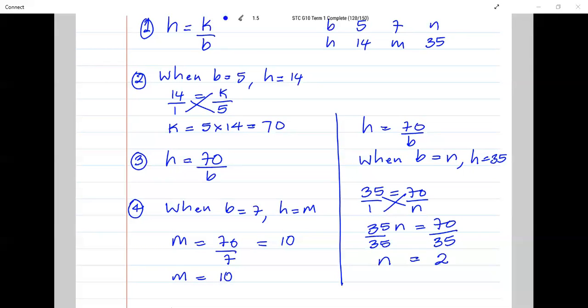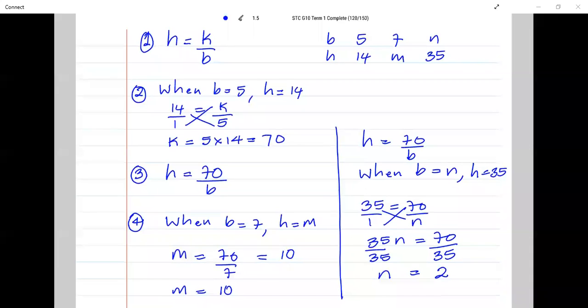So, ladies and gentlemen, M is equal to 10 and N is equal to 2. All right, the four steps are before you. These are the four steps that I took. And this is the first question that we're doing, where it's the first inverse variation question. So the next one is going to be an inverse variation question, and that one I'm going to ask you to do on your own. Make your notes, everybody.